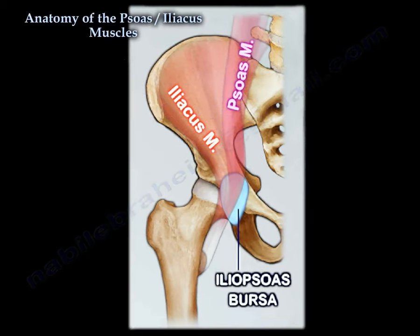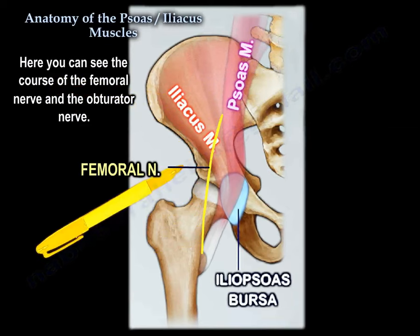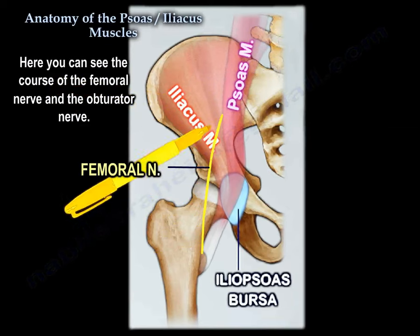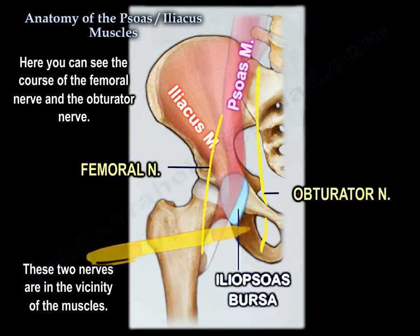Here you can see the course of the femoral nerve and the obturator nerve. These two nerves are in the vicinity of the muscles.